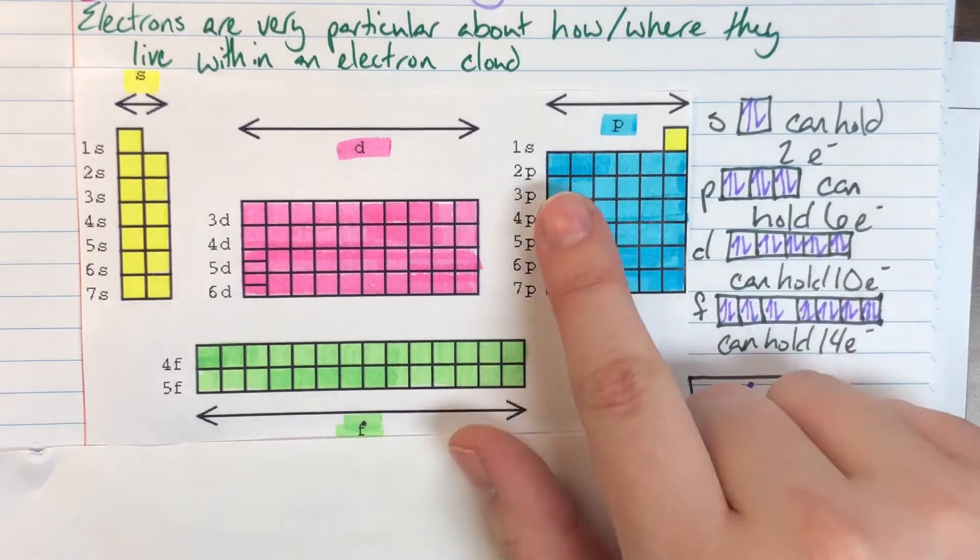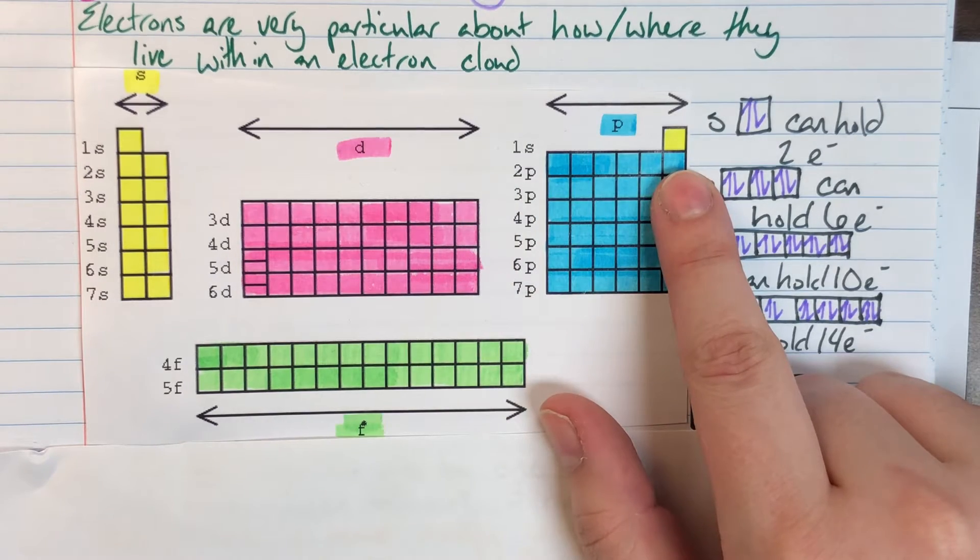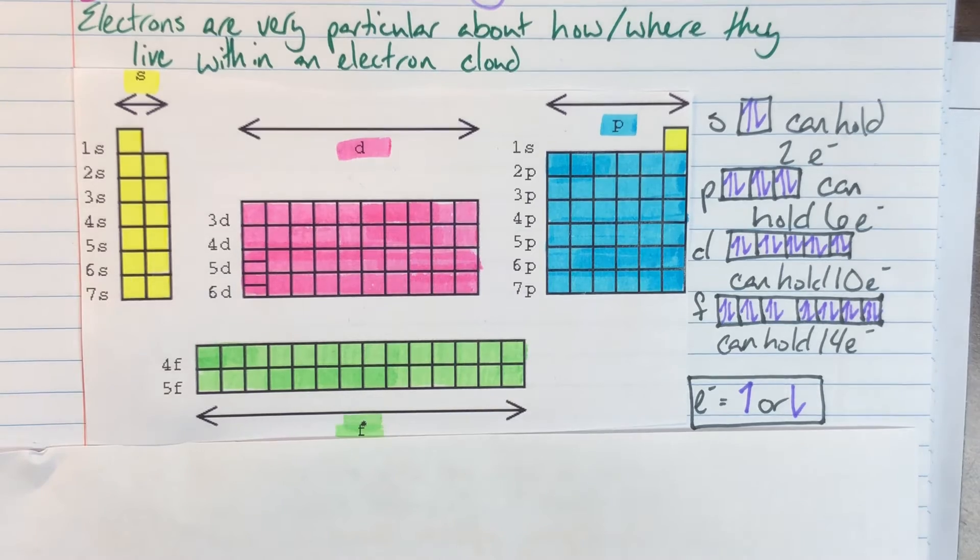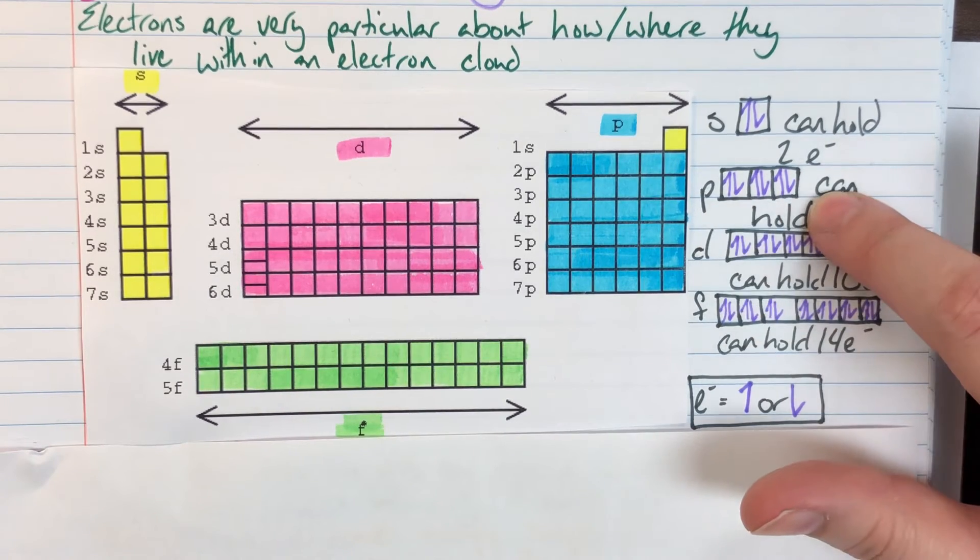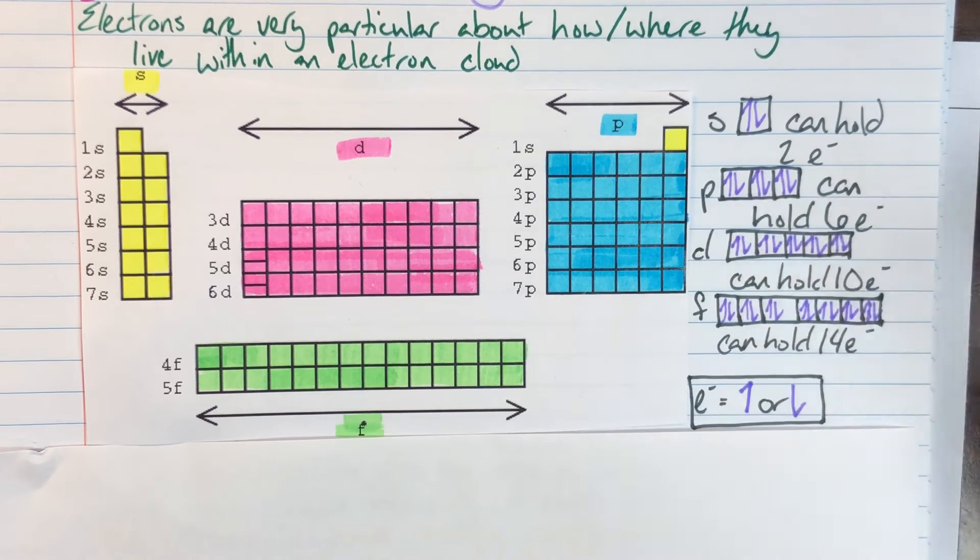In my P block, I have a total of six electrons that live within the P block. Each box can contain two electrons, which would make me have six total electrons, but three individual suborbitals within that P block.